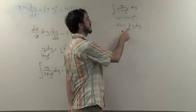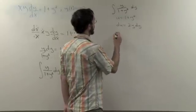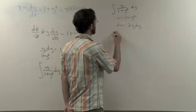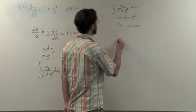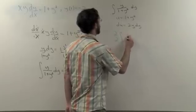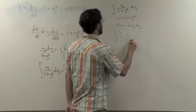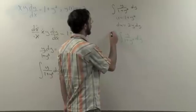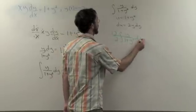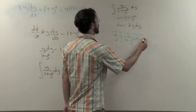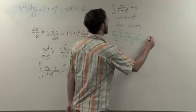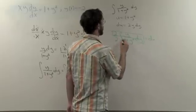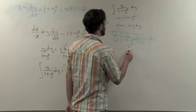Notice that we have a constant of 2 that needs to be accounted for. We do this by multiplying the integral by 2 over 2. Now, we are able to make the substitution for du along with the substitution for u.